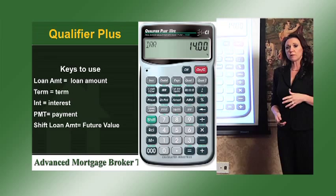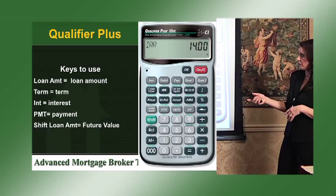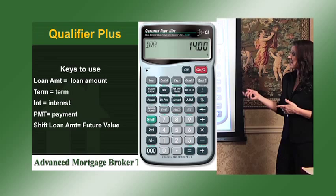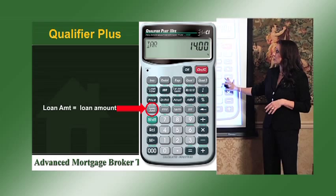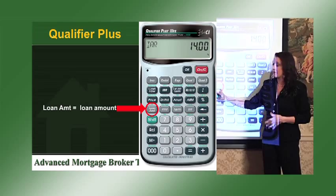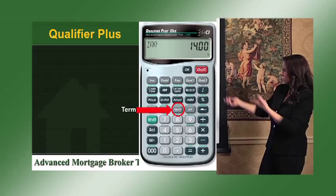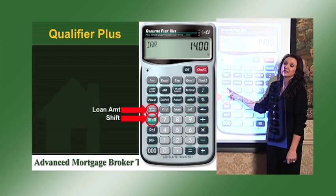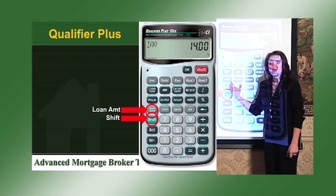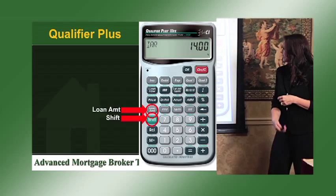On the Qualifier Plus, the keys you're going to use are: Loan Amount, which is your loan amount; Term, which is the term; INT, which is interest; PMT, which is payment; and Shift Loan Amount, which equals future value. This is why I like this calculator — look at how clean and easy it is. You don't have to remember that PV equals loan amount; it just says Loan Amount. Then you've got Term, Interest, and Payment. In small blue font right above Loan Amount it says FV, so Shift Loan Amount gives you the future value calculation.